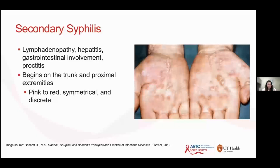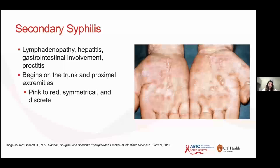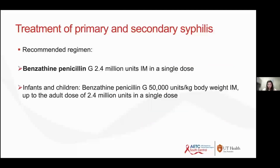Secondary syphilis is classically the rash. They could also have lymph node swelling, hepatitis, GI involvement, and proctitis. It begins on the trunk and proximal extremities. The classic finding is this is one of the few rashes that involves the palms and soles — similar to Coxsackie disease in kids, RMSF, and syphilis in adults. So if someone has any type of rash, whether papular, maculopapular, or ecchymotic, you definitely want to do a syphilis screen.